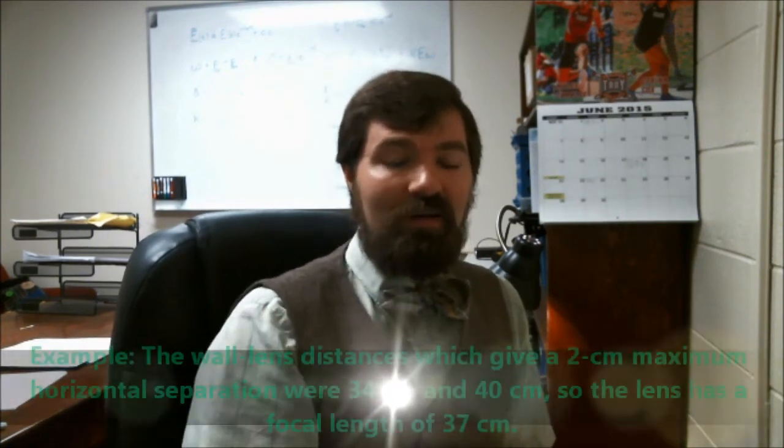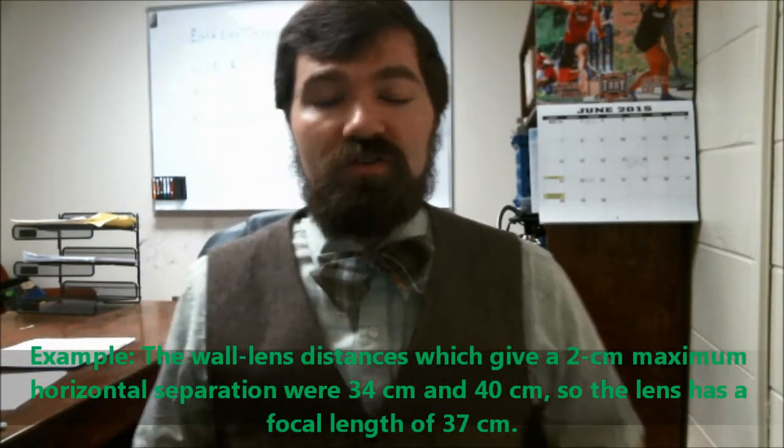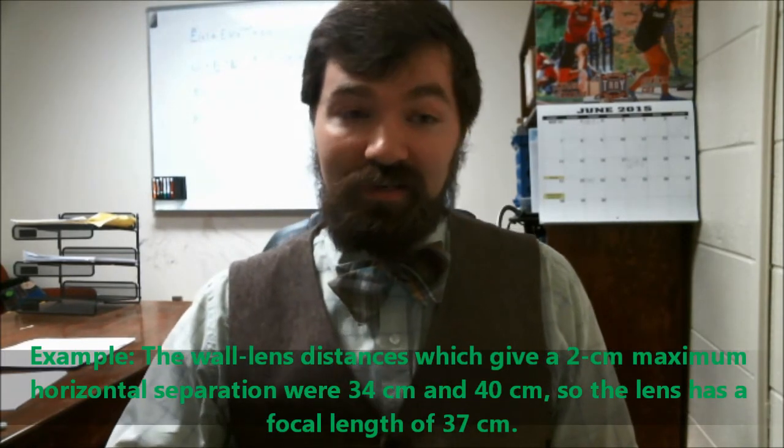So I need to measure both of those distances between lens and wall. And then I divide, basically I average them. And that average should be the focal length of my lens. So that's the second method.